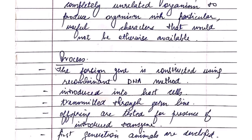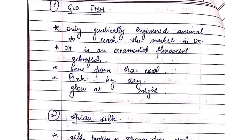The steps involved in creating a transgenic animal are: first, a foreign gene is constructed using recombinant DNA technology and is inserted into the host cell. Then it is transmitted through the germ line, and then it is tested whether the inserted gene gives the possible outcomes or not. Then the first generation of animal is ready.